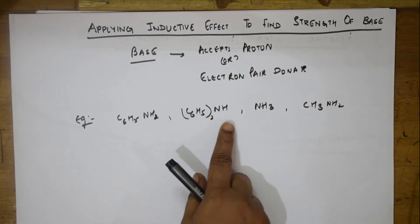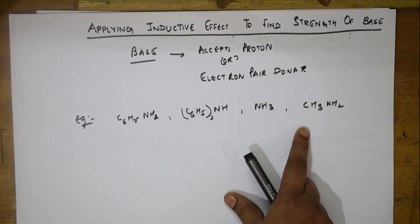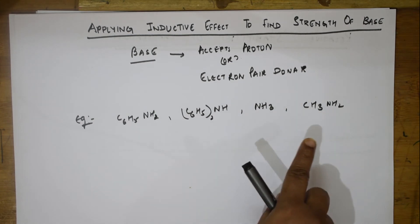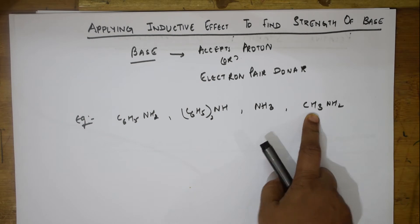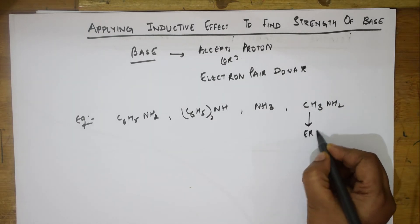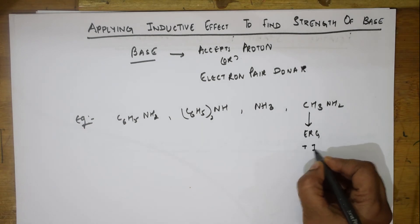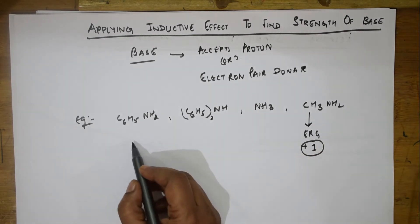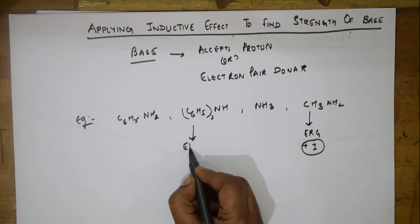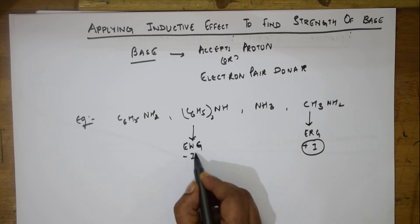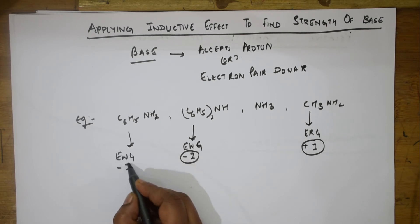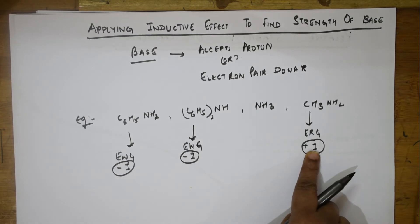We have aniline, diphenylamine, methylamine, and ammonia. Methylamine has a methyl group, which is an electron-releasing group — it shows plus-I effect. Aniline and diphenylamine have phenyl groups attached, which are electron-withdrawing groups — they show minus-I effect.